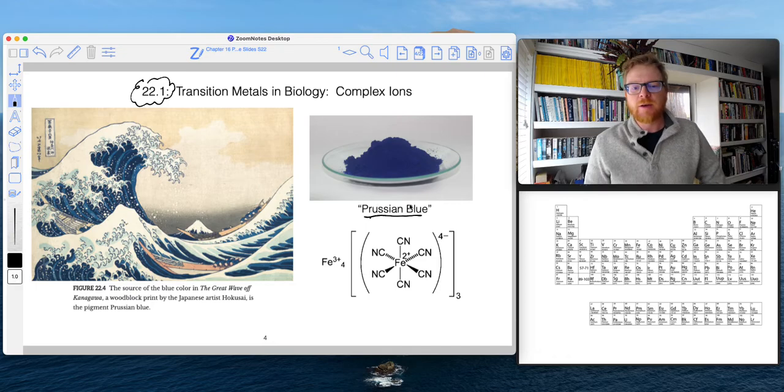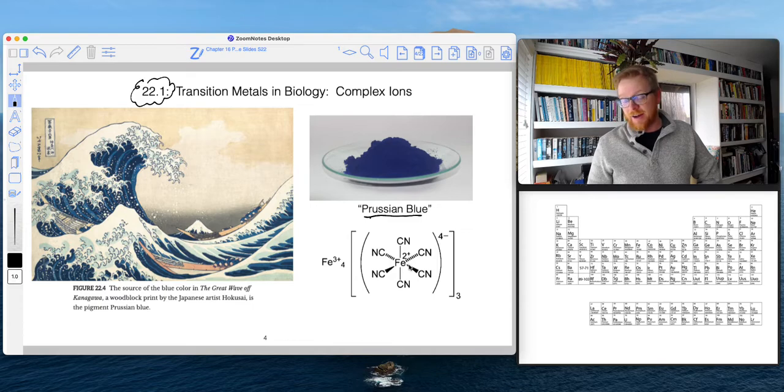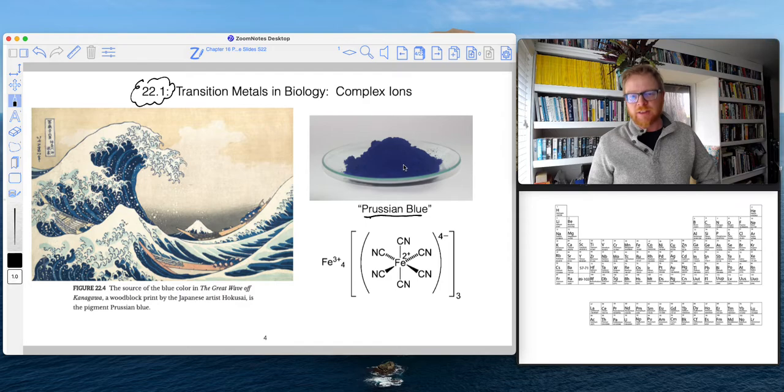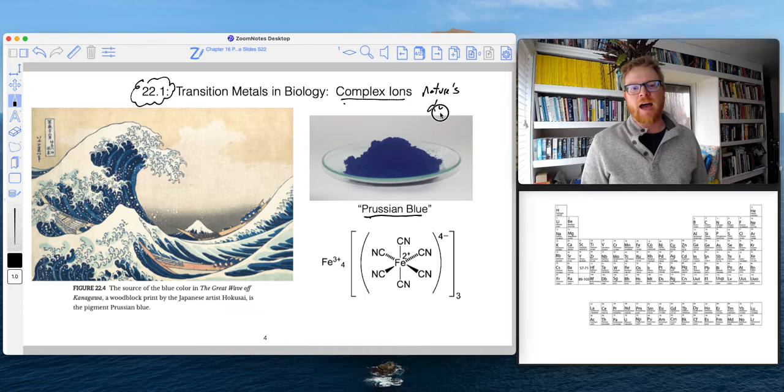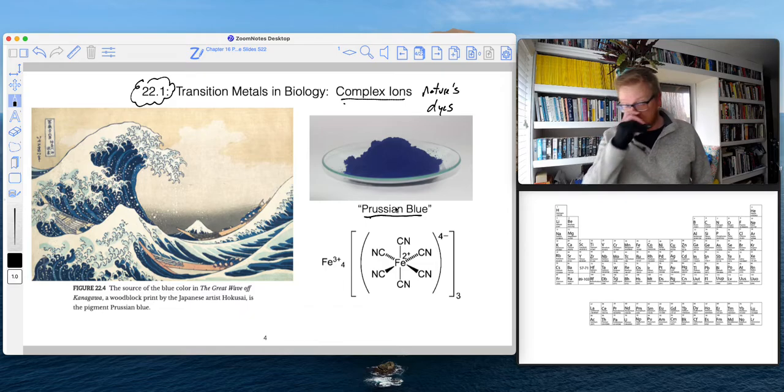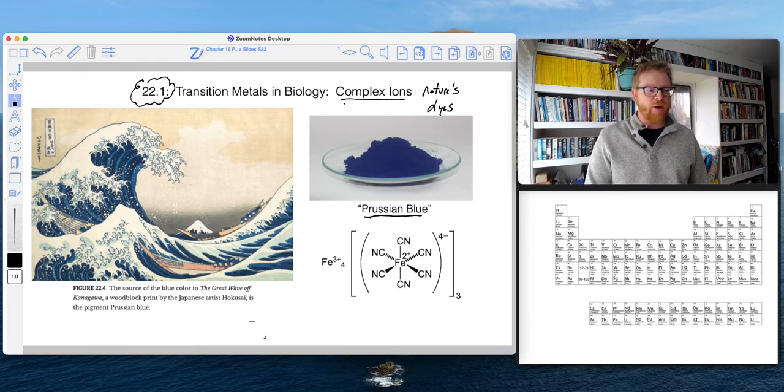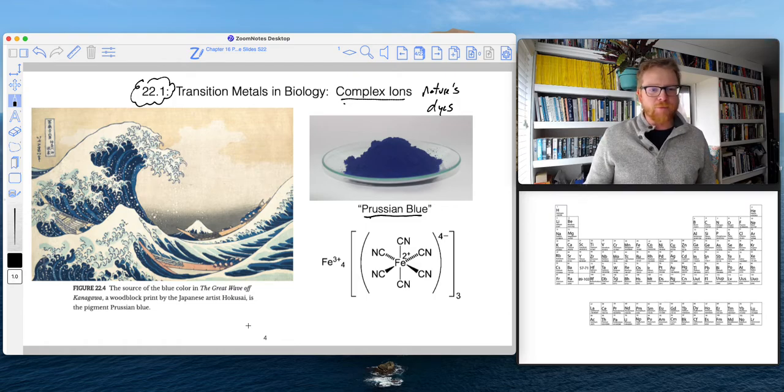This Prussian Blue is made up of a complex ion. Here it is, this is the compound, and it's this lovely blue color. Most complex ions are in fact very colorful, so I'm going to call these nature's dyes. For example, this Prussian Blue famously was used for this painting that I absolutely love: the Great Wave of Kanagawa by the Japanese artist Hokusai.